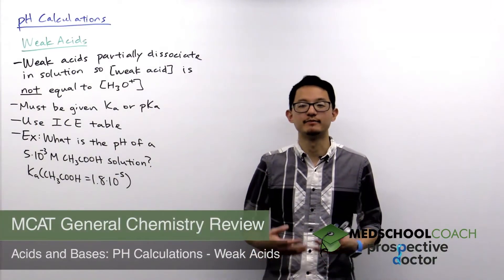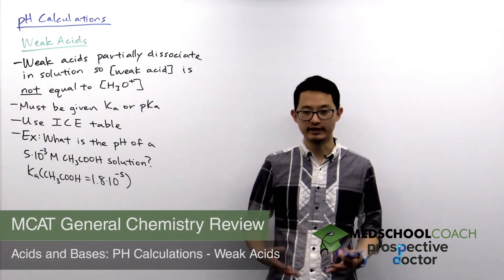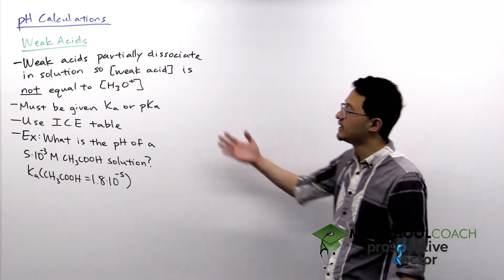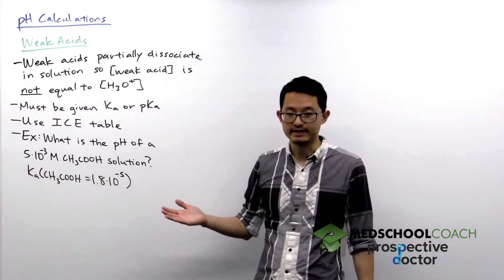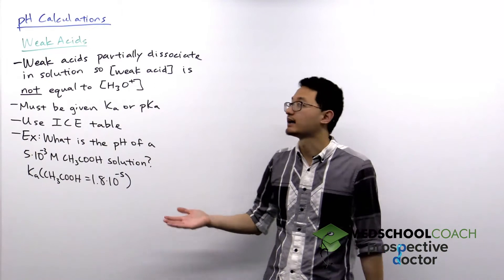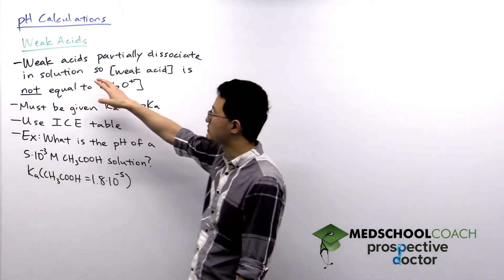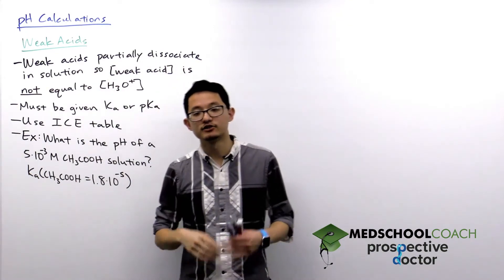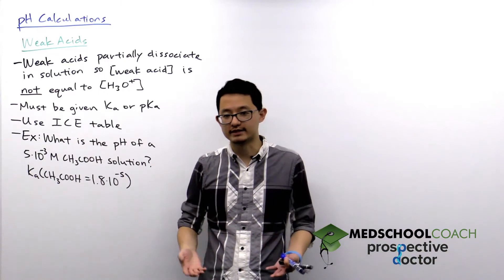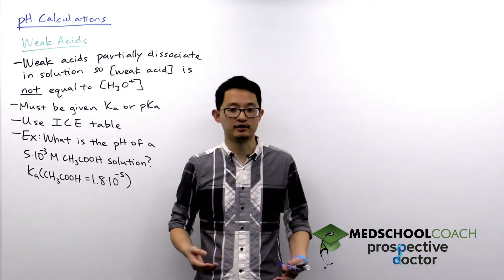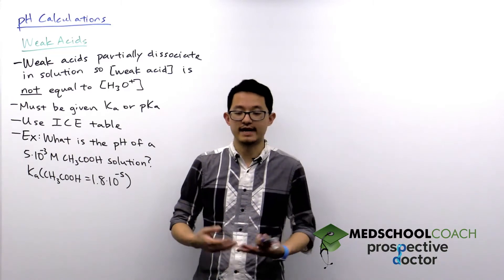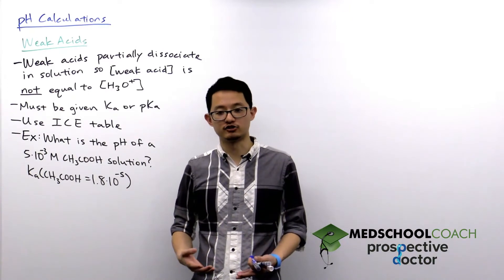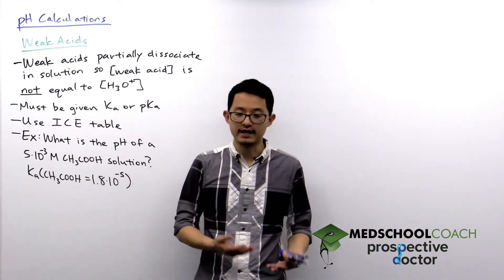In this video we're going to look at how to do pH calculations for weak acids and weak bases. As you might recall, in the last video I mentioned that pH calculations for strong acids and strong bases are much easier than for weak acids and weak bases. The reason is that weak acids do not dissociate completely — they only partially dissociate — so you cannot assume that the weak acid concentration equals the hydronium ion concentration. That gives you an extra task: you first need to figure out the hydrogen ion concentration, and then you can use that value to do the pH calculation.